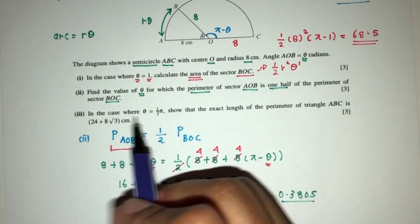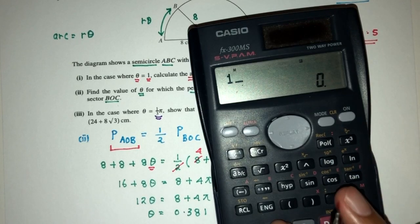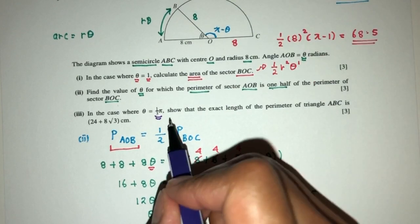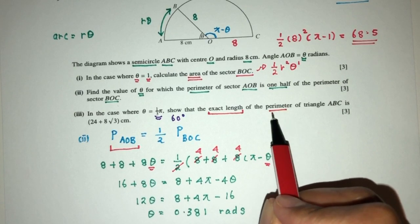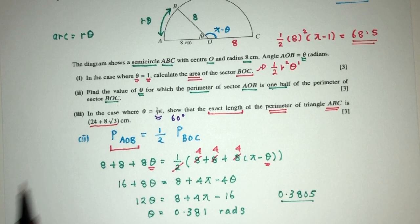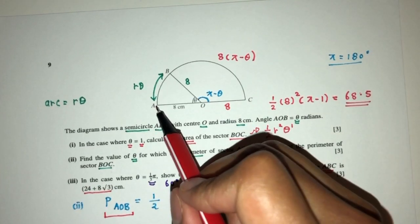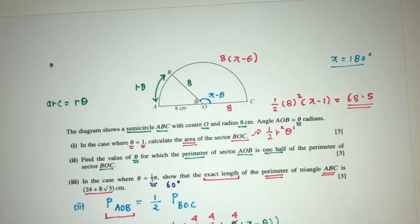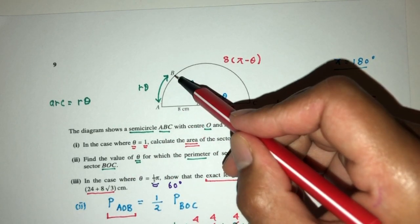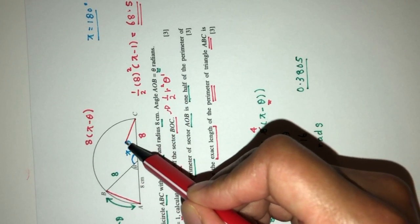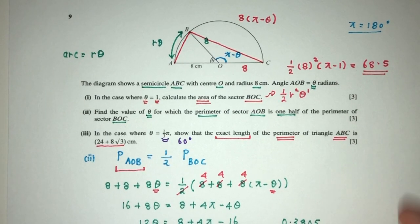Now for Part 3: in the case where theta equals pi over 3, we know pi over 3 is 180 divided by 3, which is 60 degrees. In the case where theta is 60 degrees, we have to show that the exact length of the perimeter of triangle ABC is a given expression. Triangle ABC has vertices A, B, and C — let's connect those points.